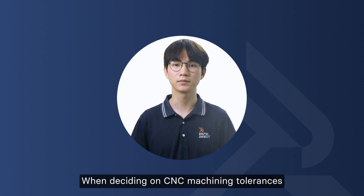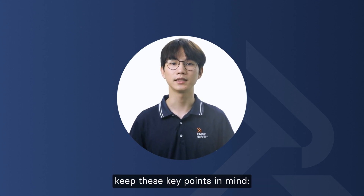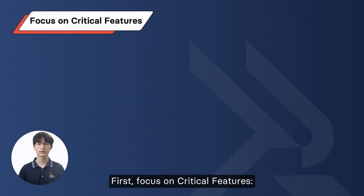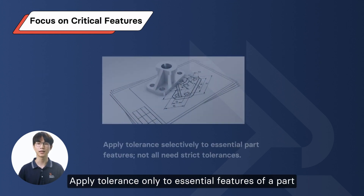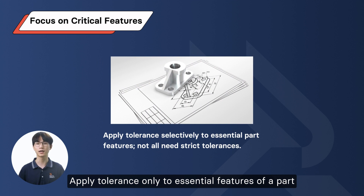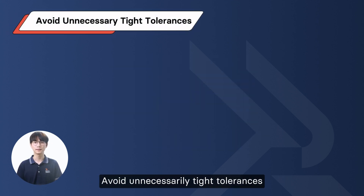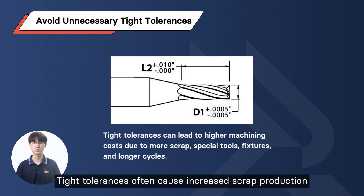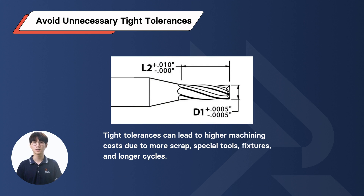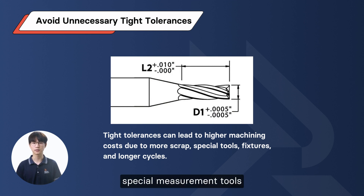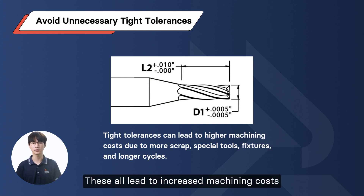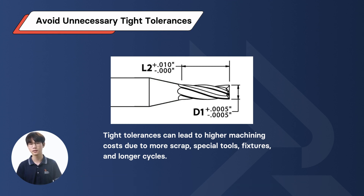When deciding on CNC machining tolerances, keep these key points in mind. First, focus on critical features — apply tolerances only to essential features of a part, as not every aspect requires strict tolerancing. Second, avoid unnecessary tight tolerances. Tight tolerances often cause increased scrap production, require special measurement tools, additional fixturing, and longer cycle times, all of which lead to increased machining costs.